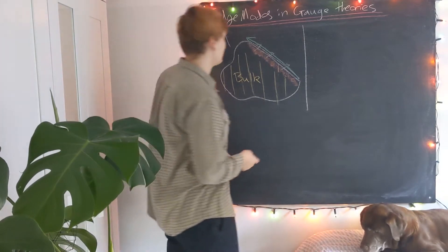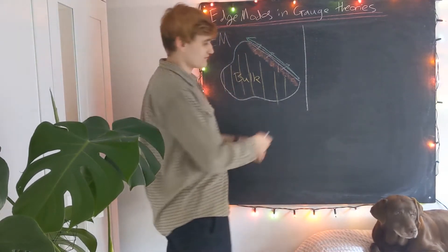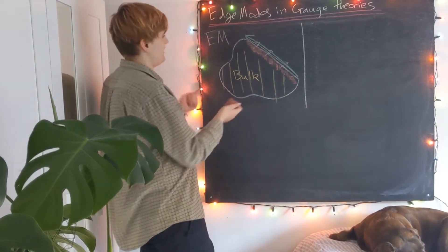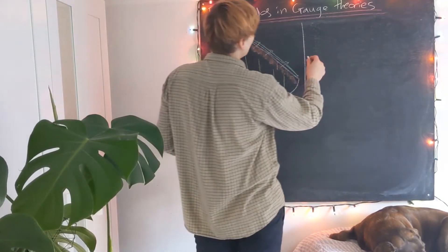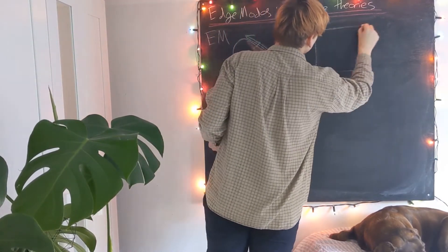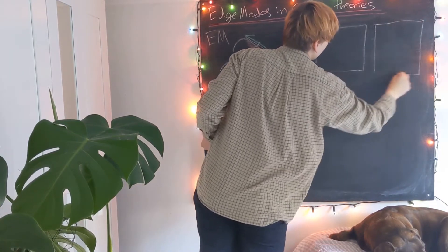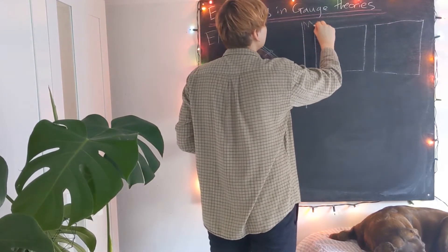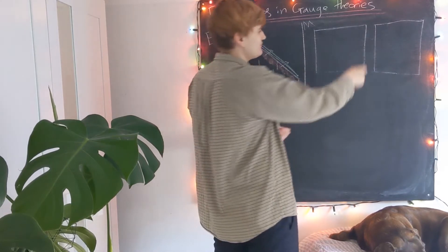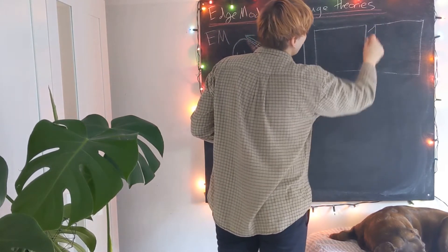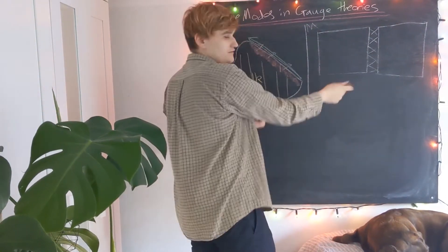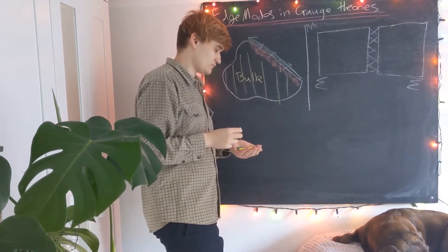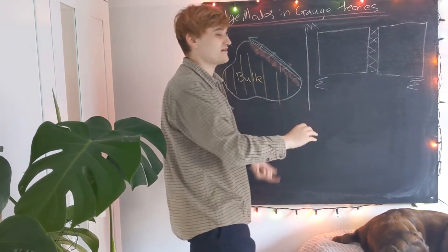More generally, it was found that we need these edge modes in gauge theories that have a boundary. In the gauge theory case, something very similar happens. If we have some space-time, I'm drawing it already separated into two regions. The whole space-time, which I'll call M, consists of these two blocks — I've already chopped it in half and introduced a boundary. The left side I'll call sigma, and the other sigma-bar. All I've done so far is drawn my space-time and chopped it in half.